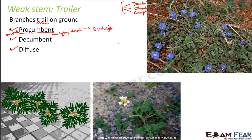The next type is decumbent. In decumbent, the stem trails for some time, but then it rises at the apex. Initially the stem was trailing on the ground, and then when it reaches its tip, it suddenly rises vertically upwards. So in procumbent, it always trails on the ground; in decumbent, it trails for some time and then rises towards its apex. One example of decumbent would be tridex.